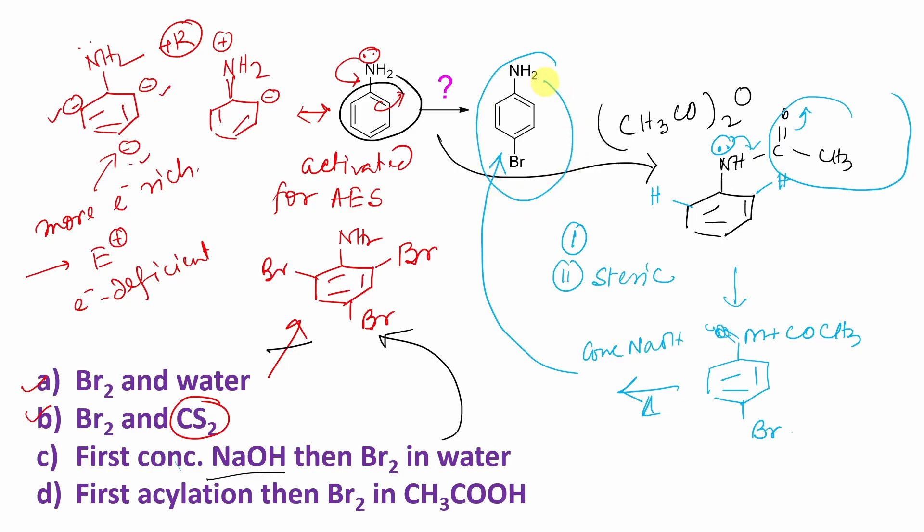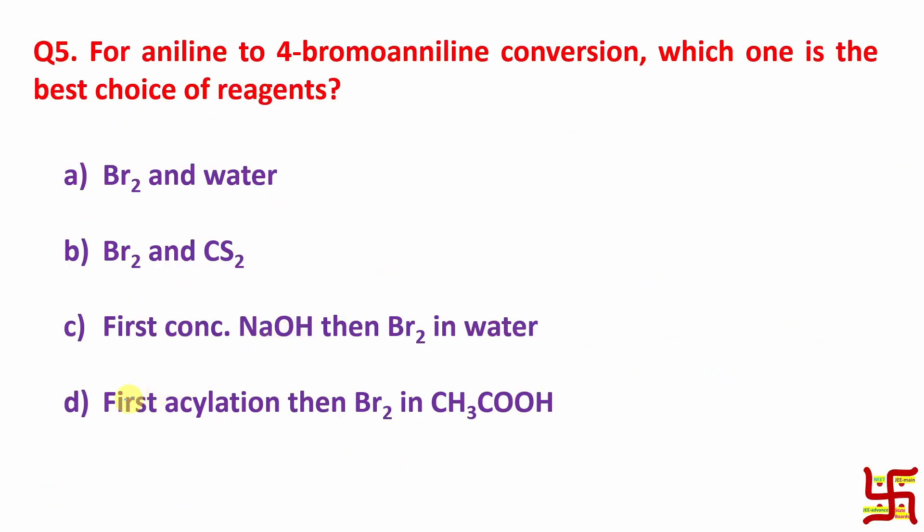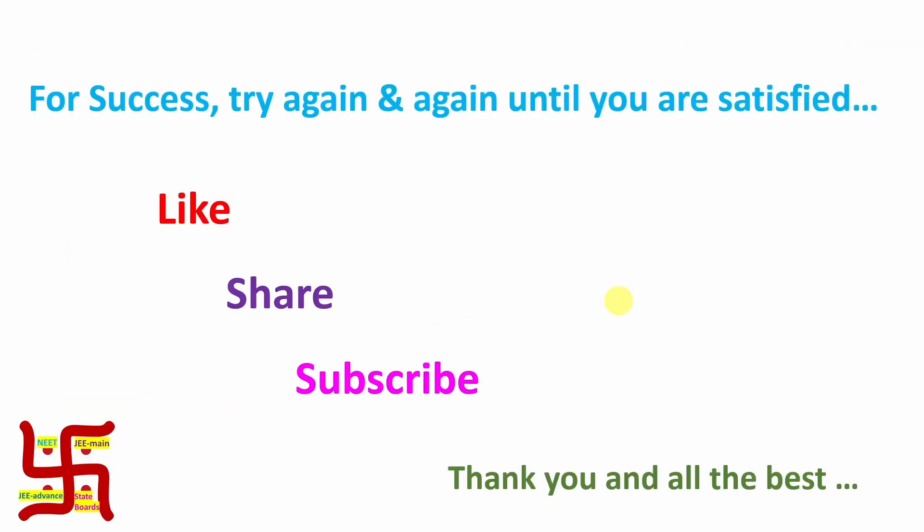So this is the overall discussion. So what is the answer? Answer here, option D. First acylation, then bromine in acetic acid. Obviously, I should have mentioned hydrolysis. But this is the right answer. So this is the end of this question. I believe this video will be useful. Thanks for watching. See you in my next video. Bye-bye.